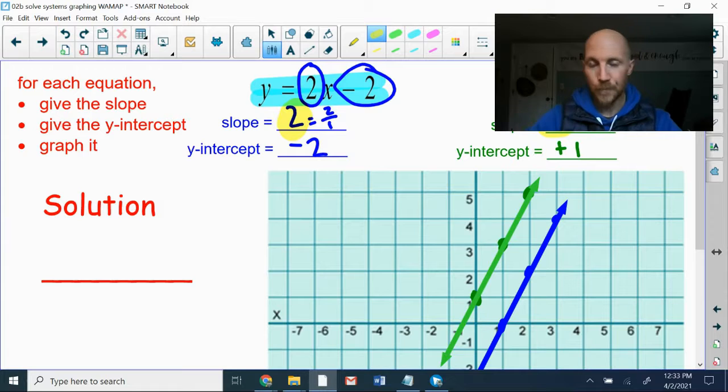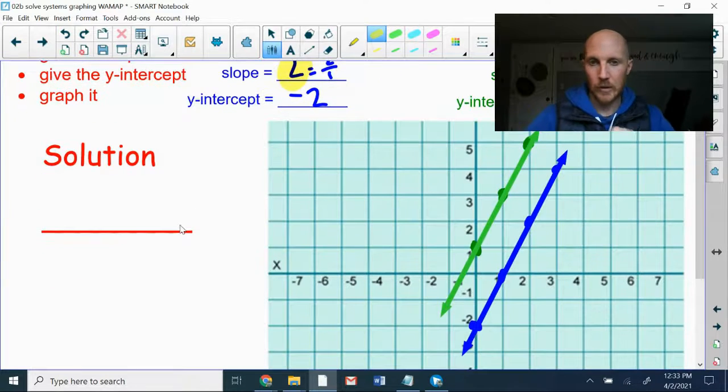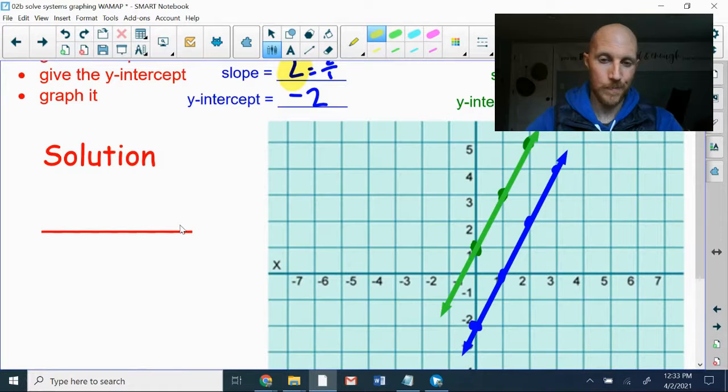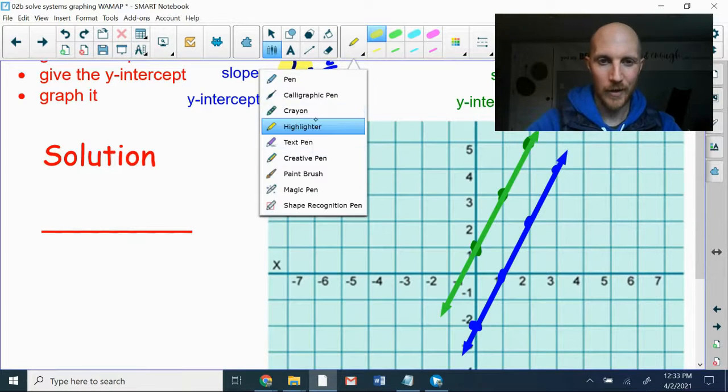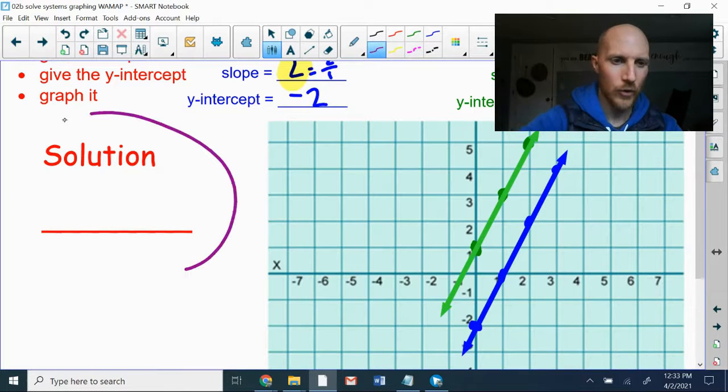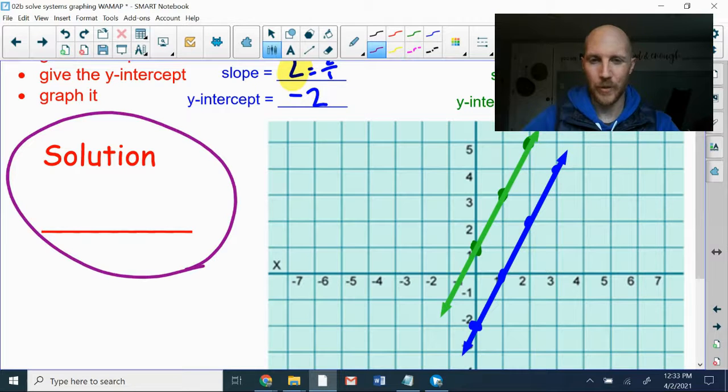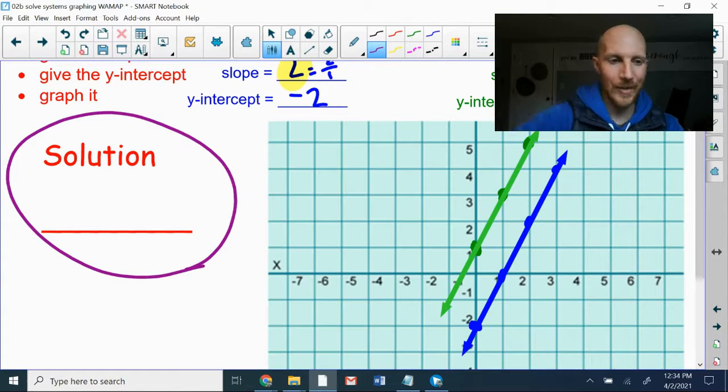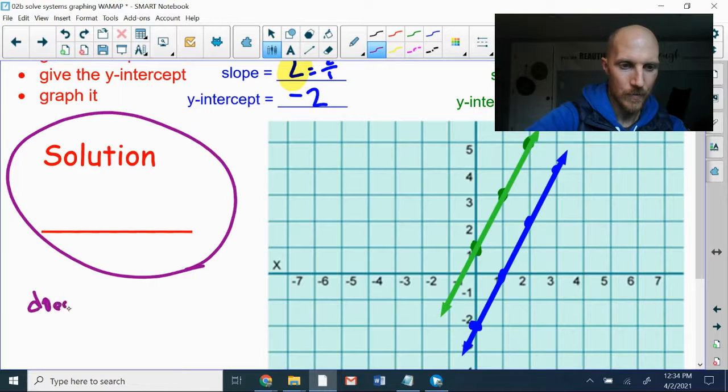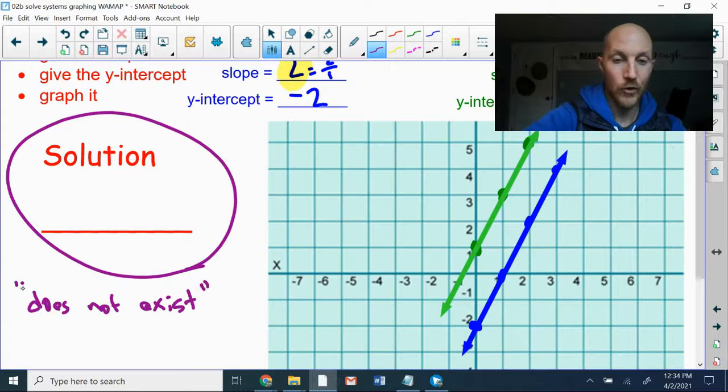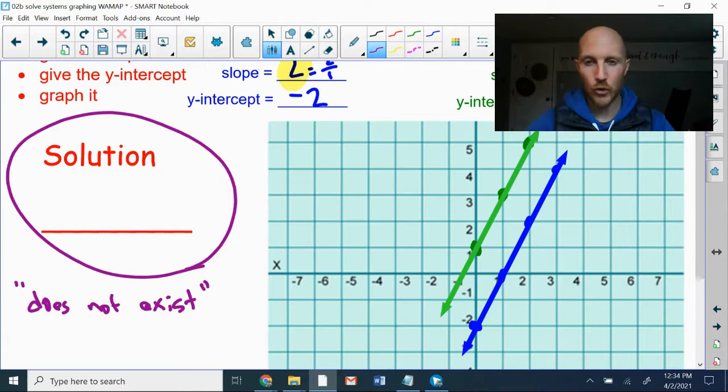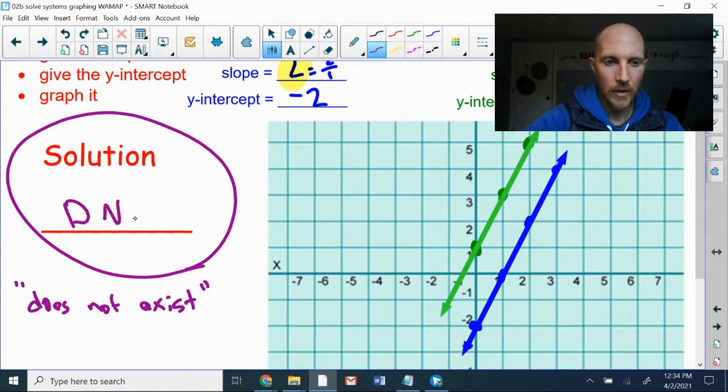So for the solution, what do we do here? The solution is the coordinates of the point that's going to satisfy both equations. It's on the graph. It's where those two lines cross and these two lines don't cross. So for the solution, we're supposed to write an X coordinate and a Y coordinate. We got nothing. The solution does not exist. Because these two lines do not cross.